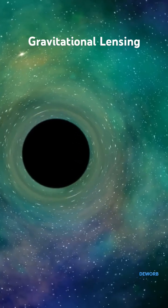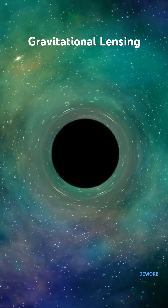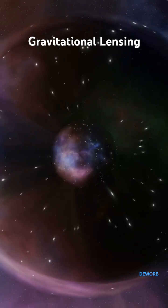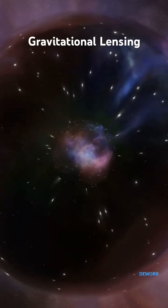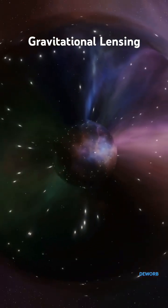Did you know that space itself can act like a giant magnifying glass? This phenomenon is called gravitational lensing, and it's one of the most fascinating effects of Einstein's theory of relativity.